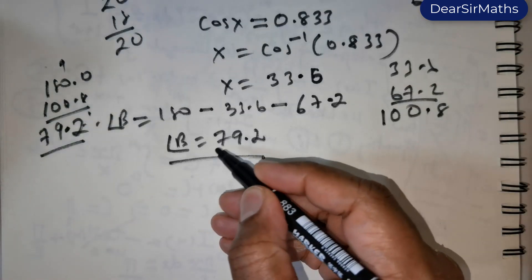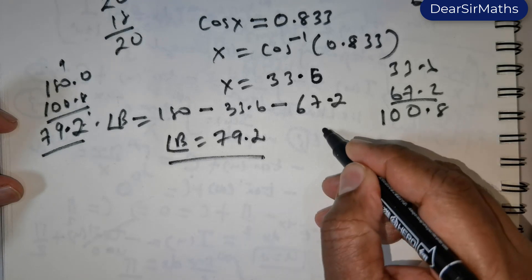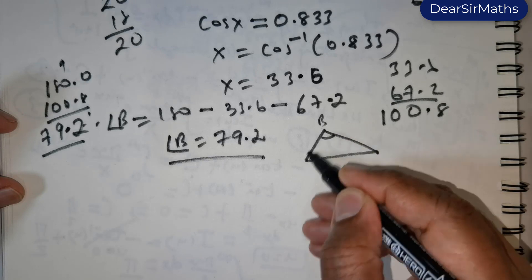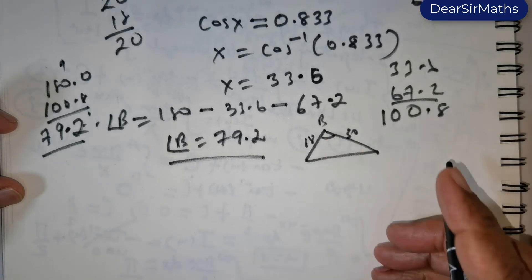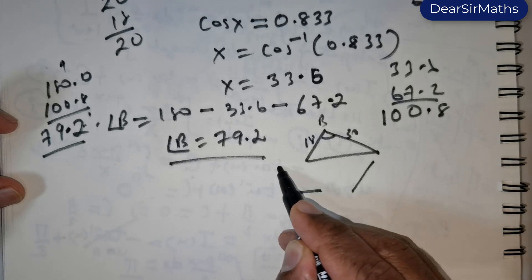Now you might be wondering why did I calculate the value of angle B. Now we got this triangle, right? This is the angle B. Now this is given to be 18, this is given to be 30. Now just flip this triangle. You will approximately end up in a triangle of this fashion.